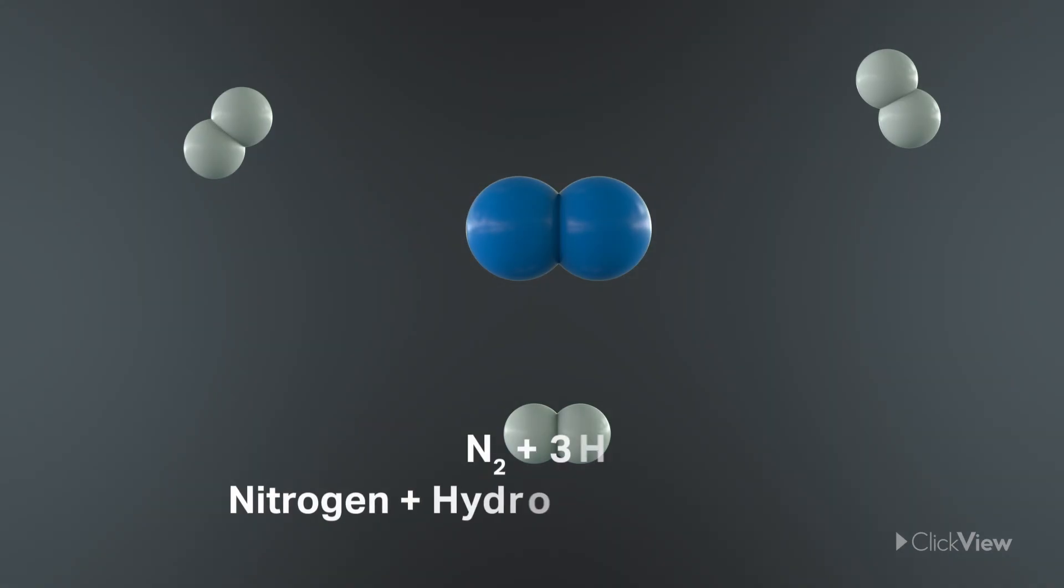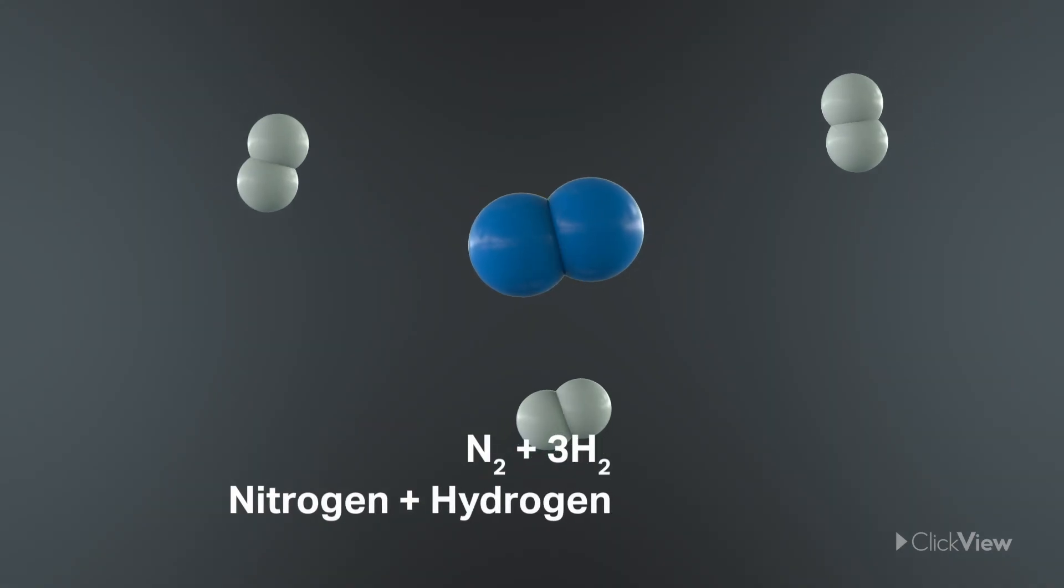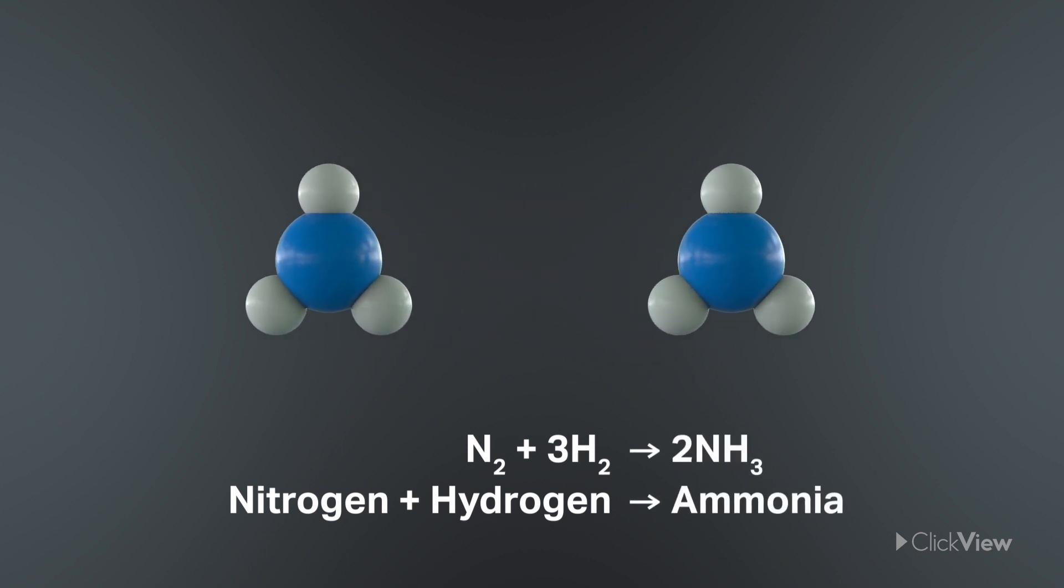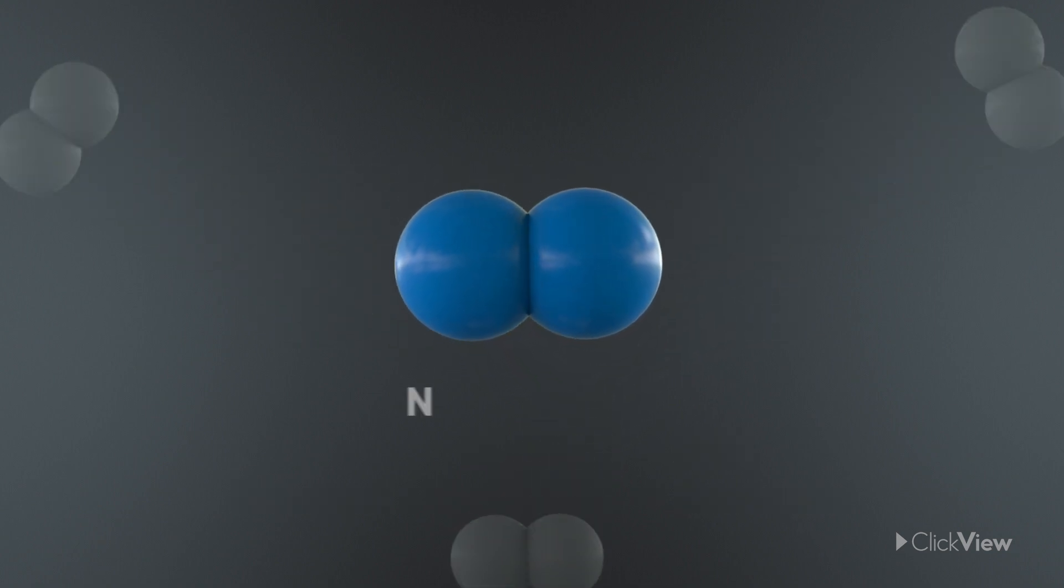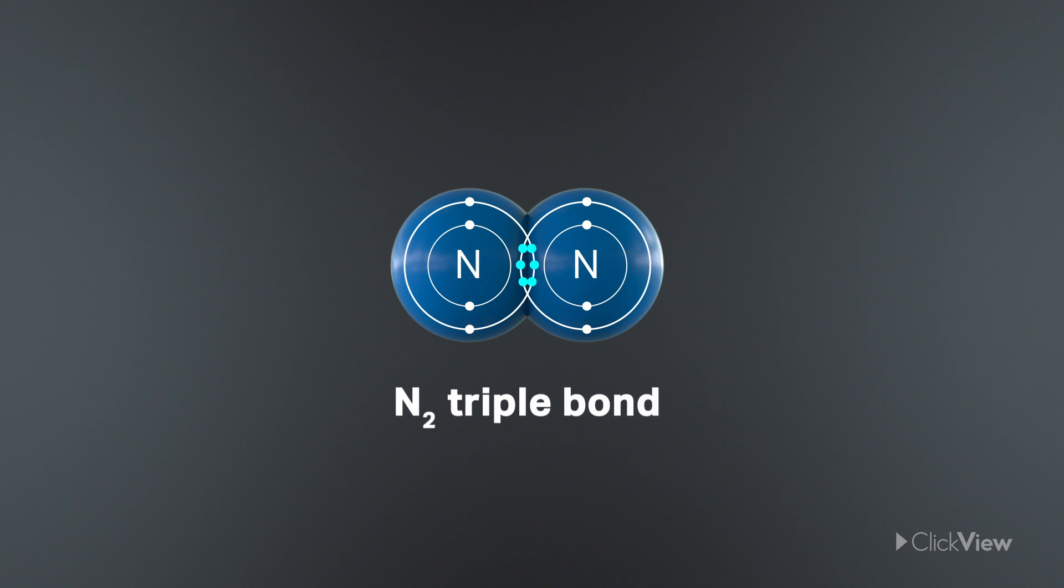In theory, a single molecule of nitrogen can react with three molecules of hydrogen to produce two molecules of ammonia. In practice, the nitrogen molecule has a triple bond that locks it up tight, making this reaction a real challenge to carry out.